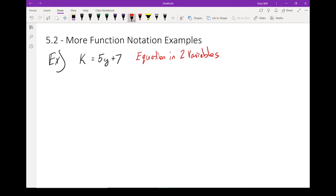If I wanted to rewrite that as function notation, we're going to keep the name k, we're going to call that k(y) equals 5y plus 7. The only thing that really changed was this front. Now remember, that is not k times y, it is k(y) equals 5y plus 7, and remember that is function notation.